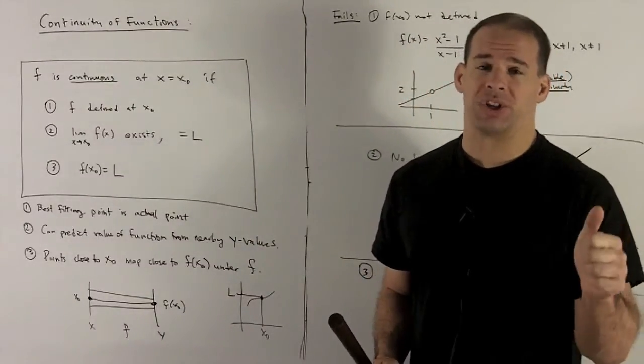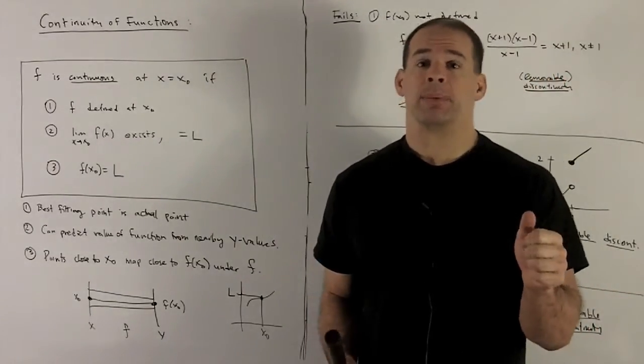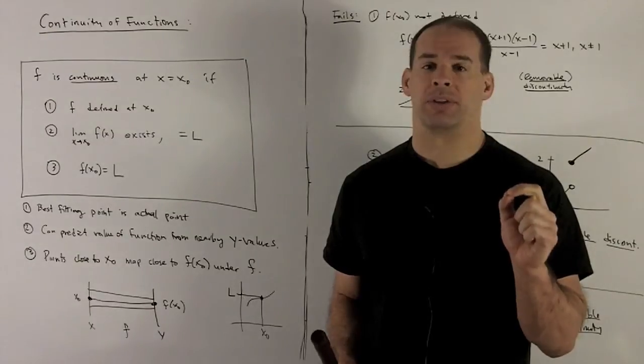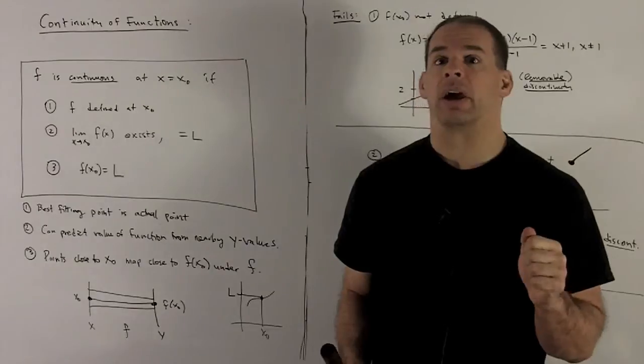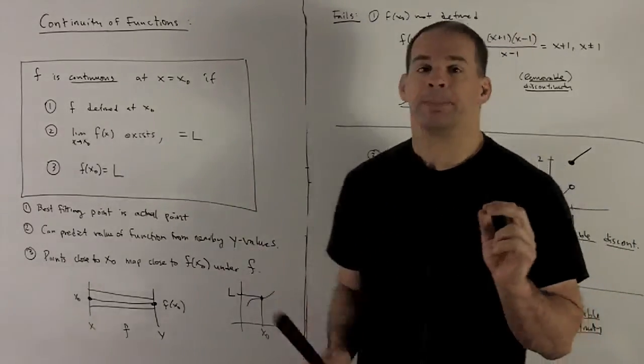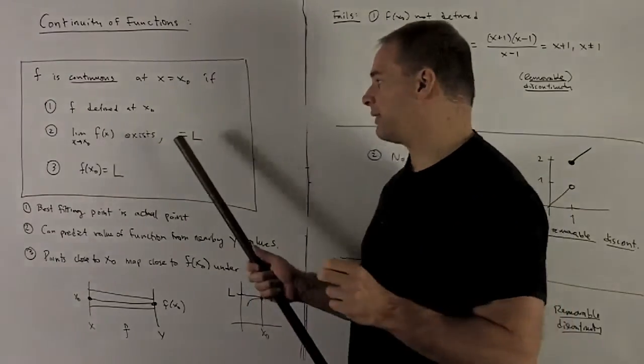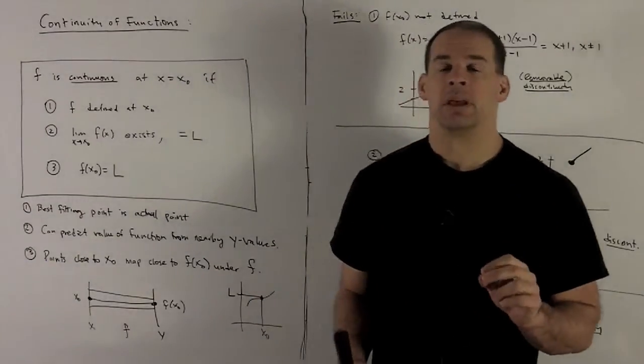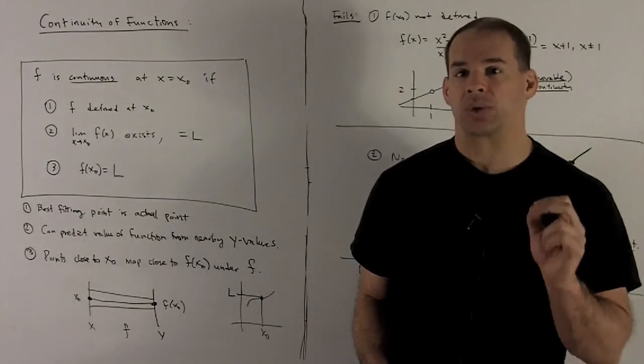First, we want our function defined at x0. So remember to take a limit, your function did not need to be defined at the point that you're taking the limit at. So here, we're going to want that the function actually has a value there. Second, we're going to want the limit at our point x0 to exist, and we'll say that its value is equal to L. And then what we want is that limit to be equal to the actual value of the function.